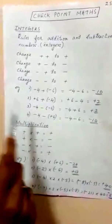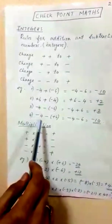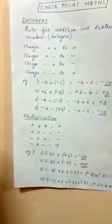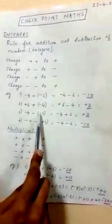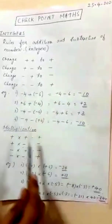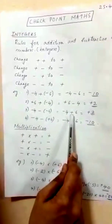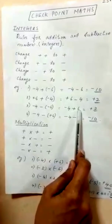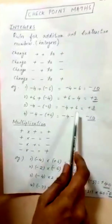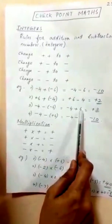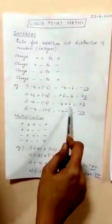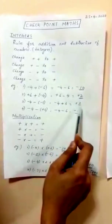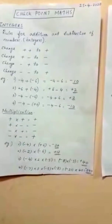Example 3: minus 4 minus minus 6. The minus and minus changes to positive, so it becomes minus 4 plus 6. Now we have opposite signs — 6 is positive, 4 is negative — so we subtract. The bigger number is 6, so the sign is plus. Answer is plus 2.